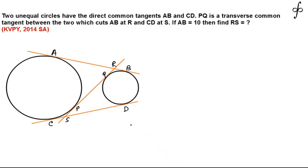Let's discuss this geometrical question appeared in KBP5 2014. The question says that two unequal circles have the direct common tangent AB and CD and PQ is the transverse common tangent which intersects the direct common tangent AB at R and CD at S.